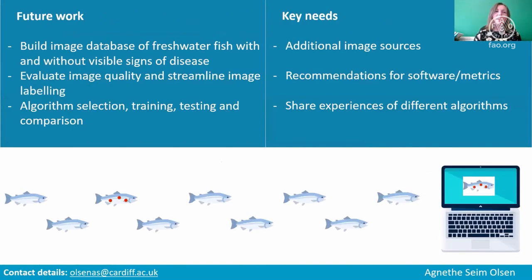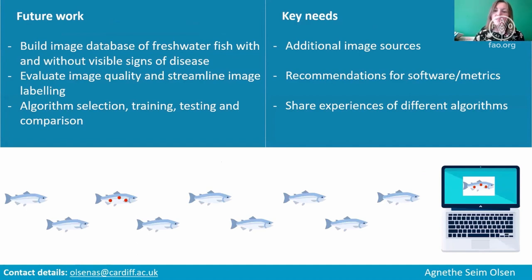In the future we need to keep building our image database of freshwater fish with and without visible signs of disease, as we need as many examples as possible. If you have images of freshwater fish, please don't hesitate to contact me. We also need to look at image quality and streamline the labelling process — marking fish as healthy or not. There are various software packages and metrics available, and if anyone has experience I'd be happy to discuss. Similarly for algorithm selection, training, evaluation, and comparison with human performance.